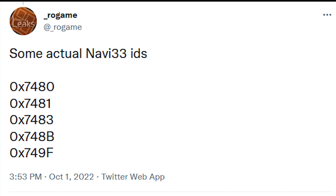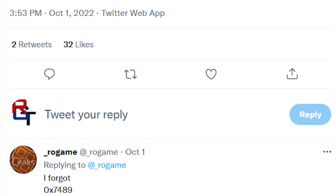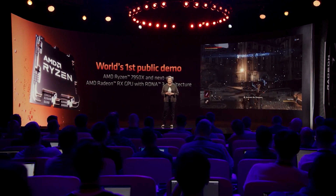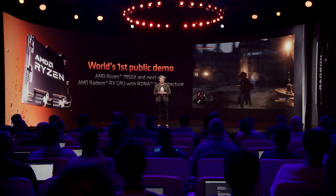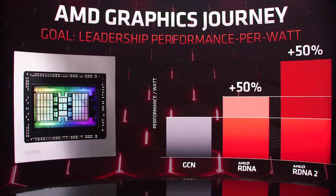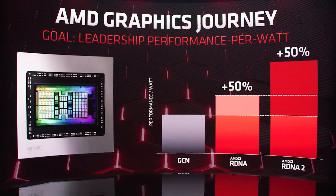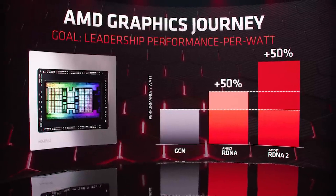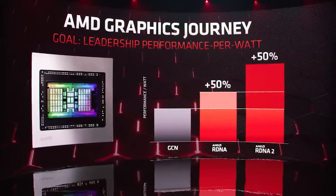Now there are a couple of caveats I really want to stress with these IDs. The first is this does not mean that there are going to be several gaming cards which release. Some of these could be engineering samples — in fact, I was told by one of my sources that almost certainly at least a few of these are. Not to mention there are going to be pro variants as well, and don't forget there are desktop variants as well as mobile variants. So I certainly wouldn't say this is an exhaustive number of SKUs which will actually end up being released.